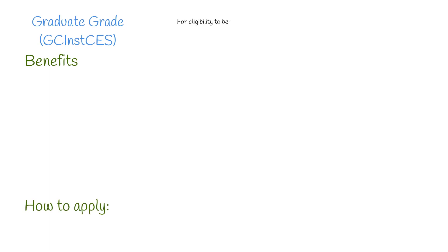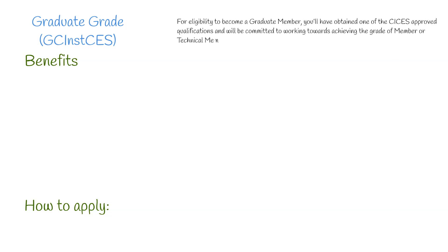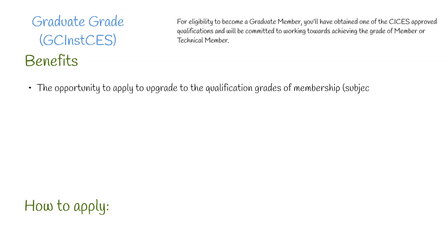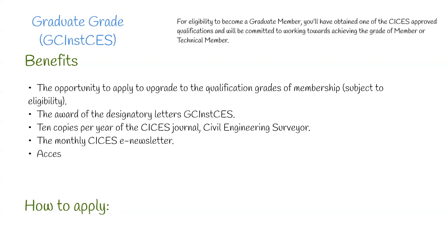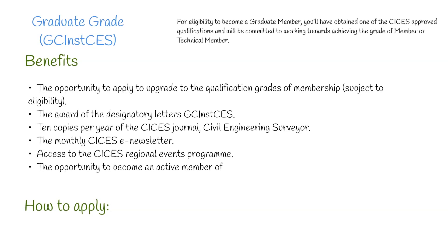Next we have Graduate grade, which includes a designation. For eligibility, you'll have obtained one of the CICES approved qualifications and will be committed to working towards achieving the grade of member or technical member. Benefits include the opportunity to apply to upgrade to the qualification grades of membership, the award of the designatory letters GCInstCES, 10 copies per year of the CICES journal Civil Engineering Surveyor, the monthly CICES e-newsletter, access to the regional events program, and the opportunity to join the CICES 2040 forum if under 36 years of age.